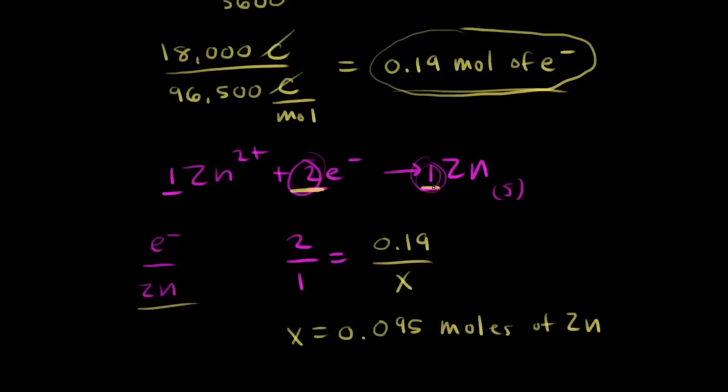And again, we got this from our mole ratio. One mole of zinc forms for every two moles of electrons. So if you have 0.19 moles of electrons, half that is how many moles of zinc that are formed.